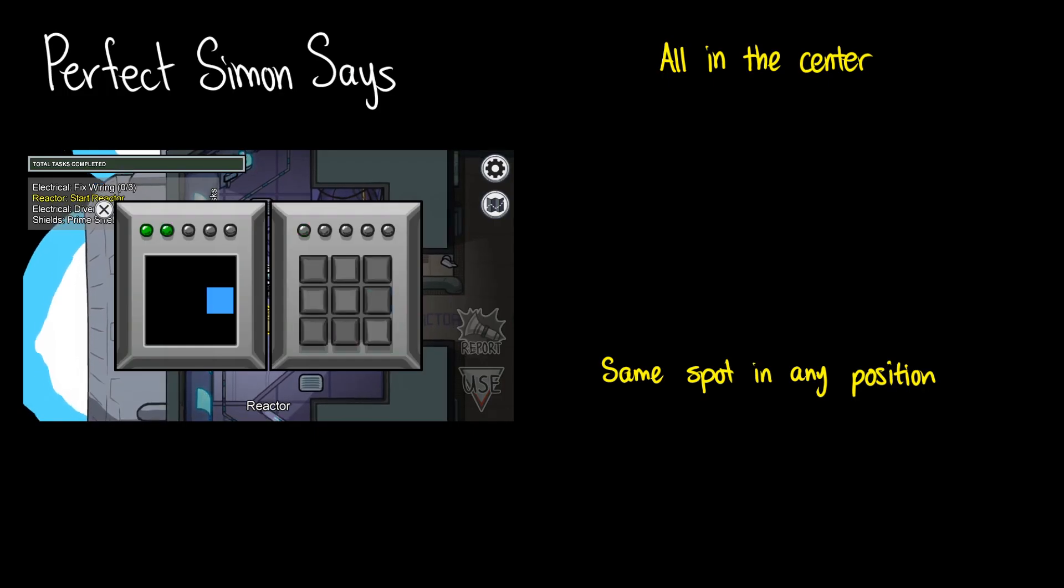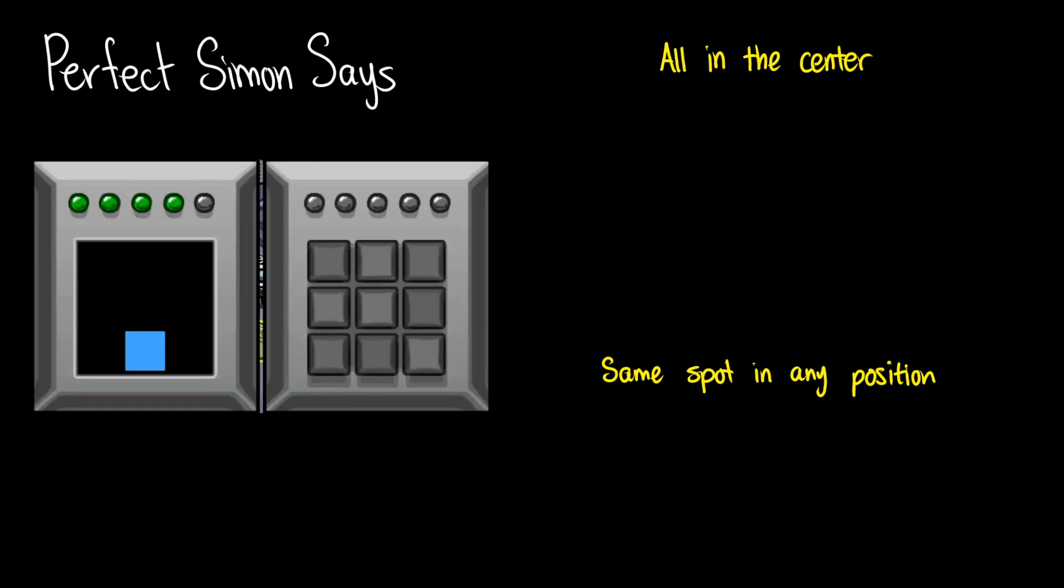What would a perfect Simon Says look like? Well, in an ideal situation, every single button would be in the center. So how many sequences have just every button being in the center? Well, it's just one sequence. Center, center, center, center, center. There's a total of one.